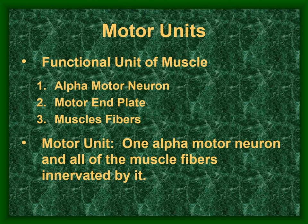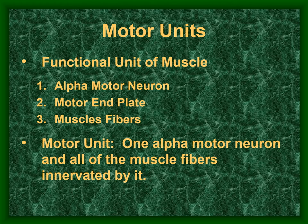The functional unit of a muscle is the motor unit, consisting of the alpha motor neuron, the motor end plate where acetylcholine is transmitted to the sarcolemma causing depolarization, and the muscle fibers themselves. A motor unit is one alpha motor neuron with all the muscle fibers it innervates.